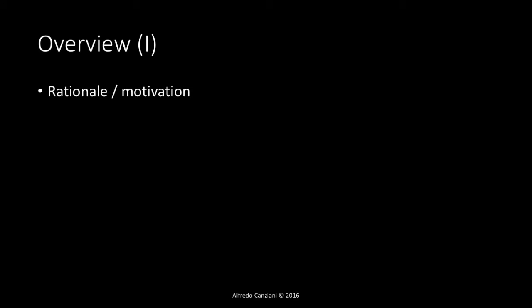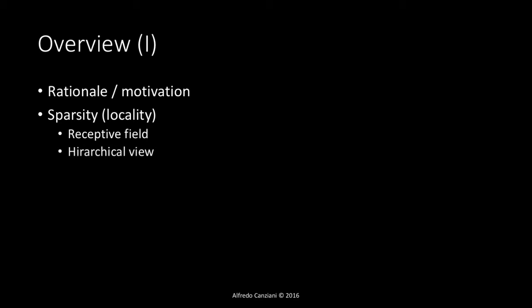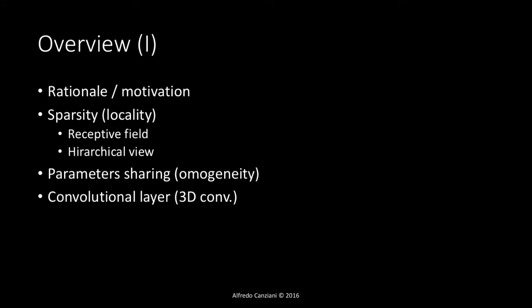We will start with the rationale and motivation — why convolutional neural networks are needed to process images. We will see that the fundamental aspects of a CNN are sparsity, which exploits locality in the input data, and specifically the receptive field and the hierarchical view of deep models. The second main aspect is parameter sharing, based on the assumption of homogeneity of the input data.